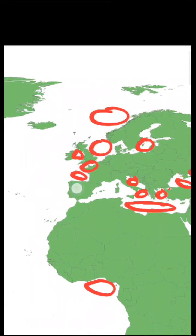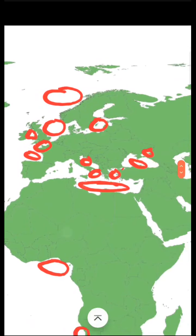This is Bay of Biscay. Then we have Mediterranean Sea, Adriatic Sea, Ionian Sea, Aegean Sea. This dot is nothing but Sea of Marmara.